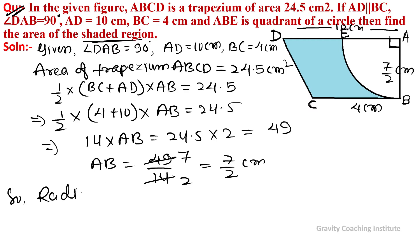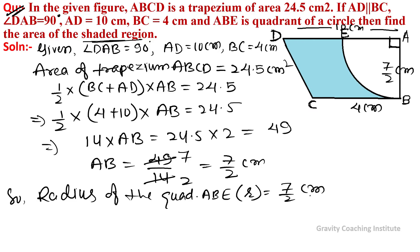So AB equals 7/2 centimeters. Now we find the area of the shaded region, which equals the area of trapezium ABCD minus the area of quadrant ABE.